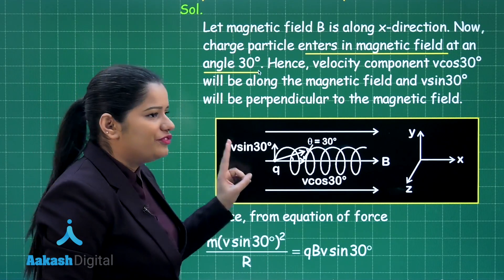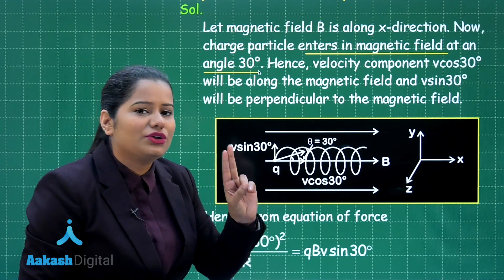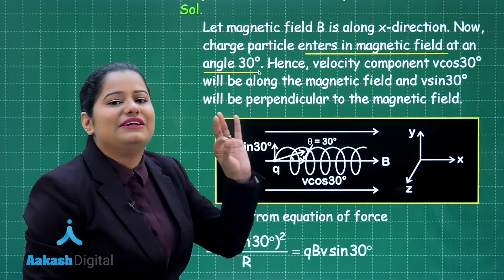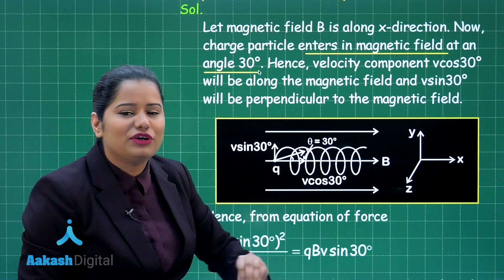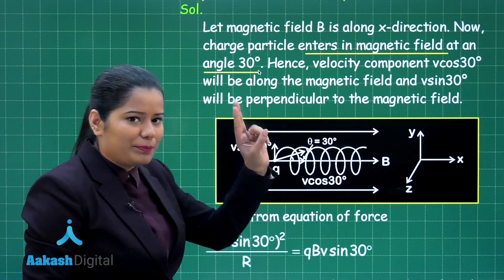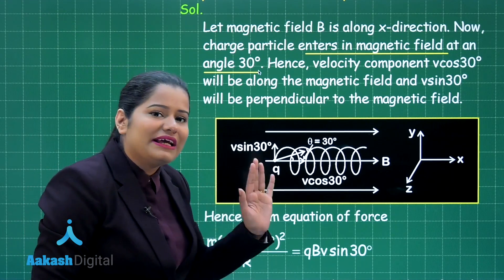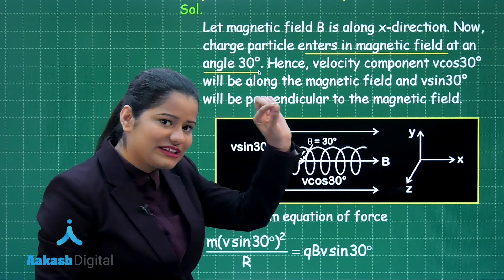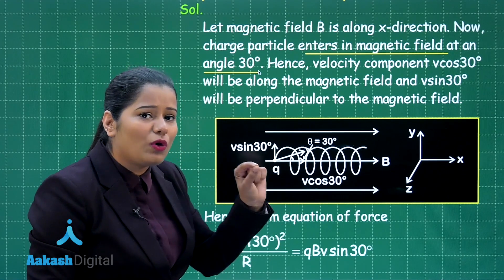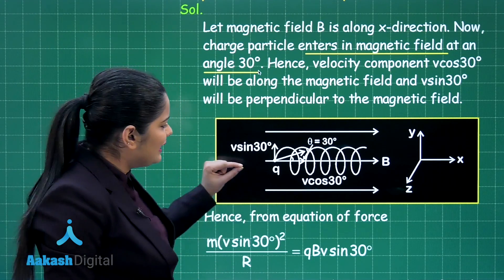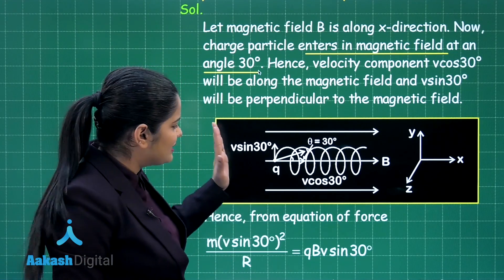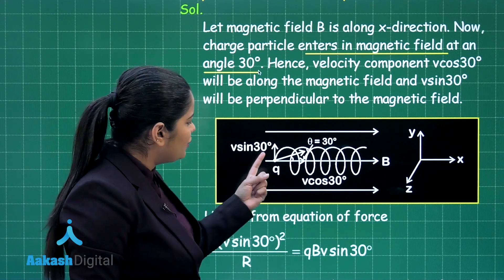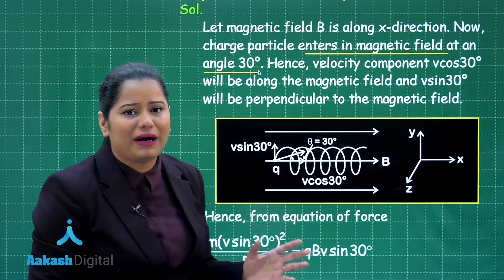Since the component V sin 30 is perpendicular to the magnetic field, the charged particle Q feels a force due to this component. This perpendicular component causes the particle to move in a circle. At the same time, the particle has a velocity component in the x direction, causing it to travel a distance in the x direction — called the pitch. So the particle moves in a helical path.